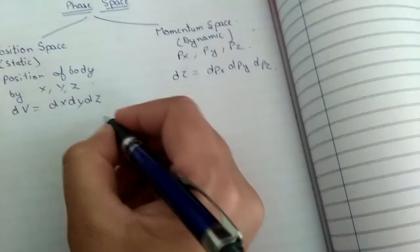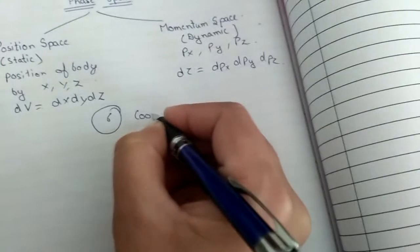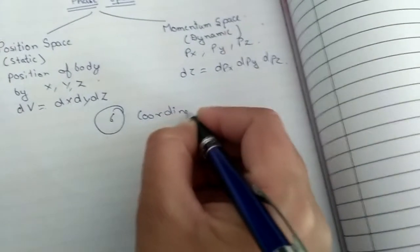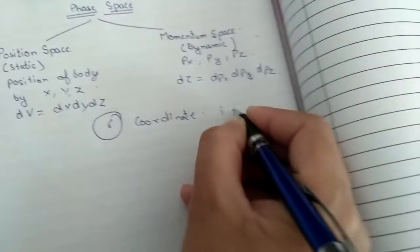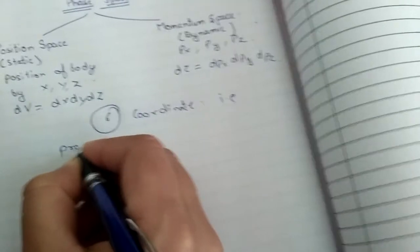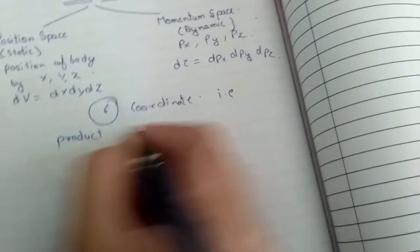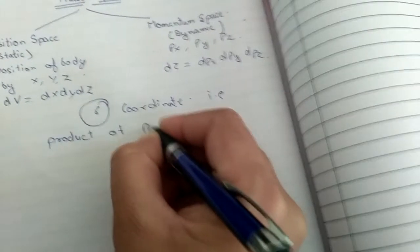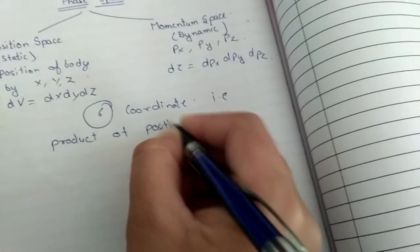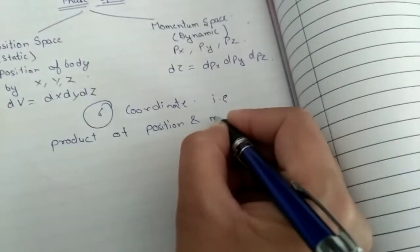Phase space consists of six coordinates that is product of position and momentum space.